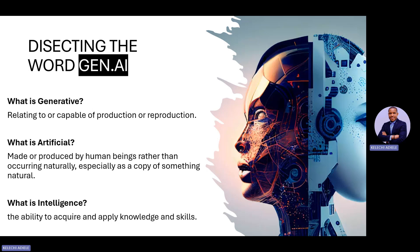Hopefully we take it up from there. Now, what is 'generative'? These definitions are coming from the Oxford Dictionary. 'Generative' means relating to or capable of production or reproduction — that's the simple definition. So anything that is generative has the capacity to reproduce itself. The second major word is 'artificial' — we're dissecting the word generative AI to really see and have a visual of what the meaning of generative AI is.